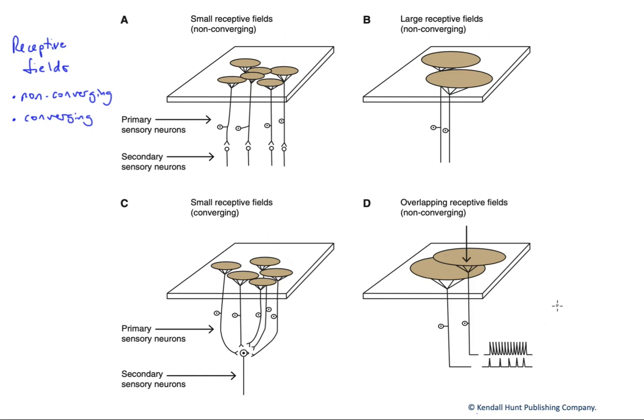In this figure, we want to talk about receptive fields of sensory neurons, as well as whether they converge or don't converge onto secondary sensory neurons. Receptive fields are the spatial area to which a particular receptor is sensitive.